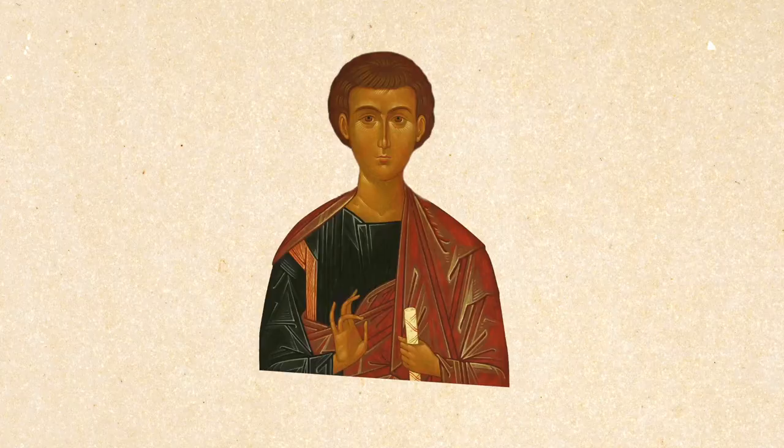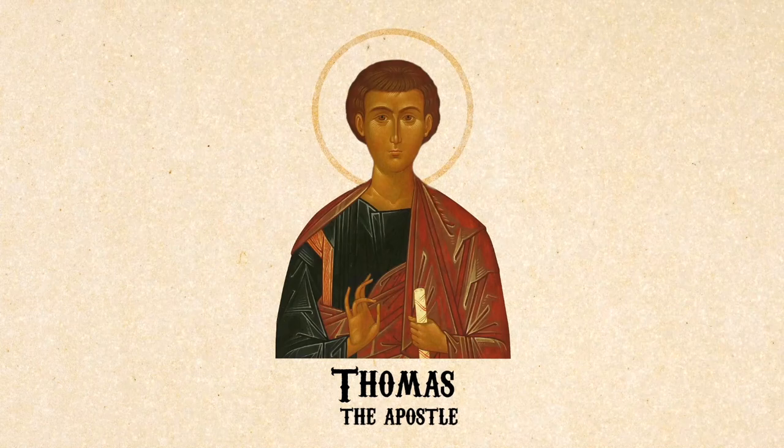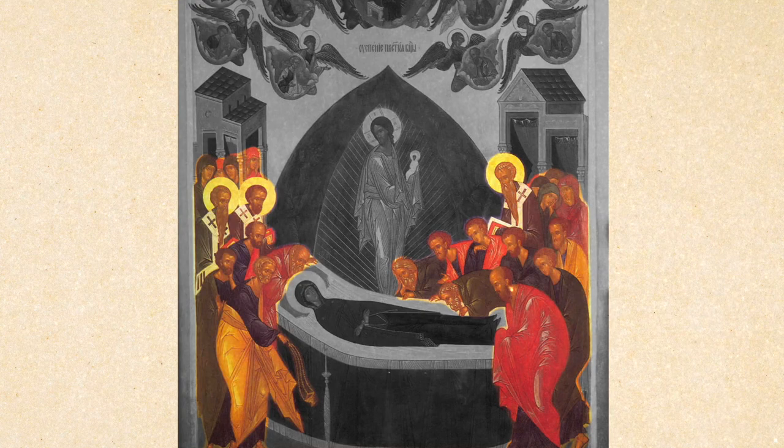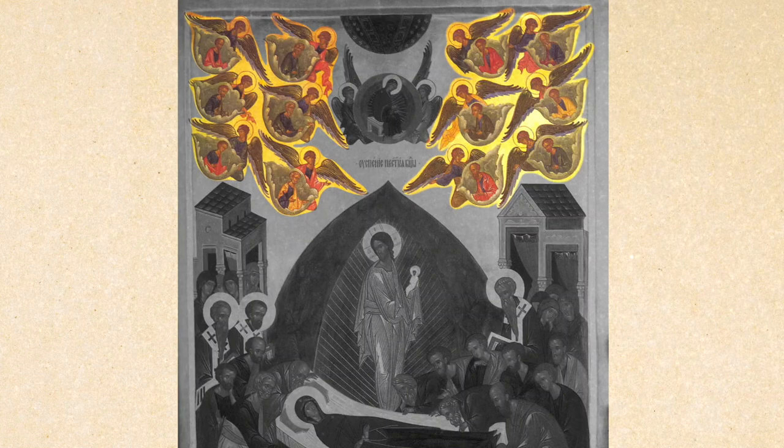One person who is not there is St. Thomas the Apostle. According to tradition, he arrived late for the funeral in Jerusalem and was very saddened by this, because he, like the other apostles, had actually been brought there by miraculous means. These miraculous ways are actually shown in several versions of the icon — you will see clouds carrying the apostles to Jerusalem. Thomas arrived in a similar way, but late.